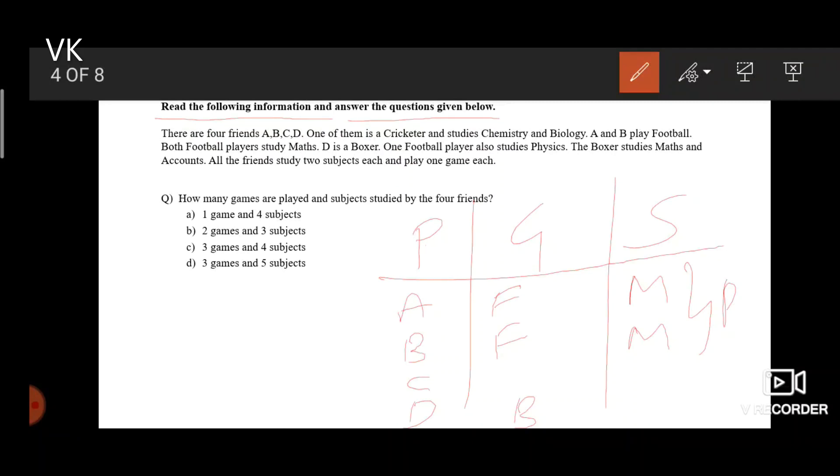The boxer studies maths and accounts. He studies maths and accounts. All the friends study 2 subjects each and play 1 game each. So we missed this point. One of them is a cricketer and studies chemistry and biology. So C is the only person who is left. C is a cricketer and studies chemistry and biology.